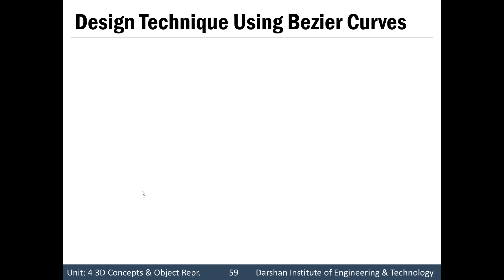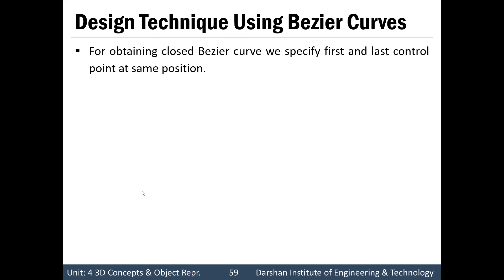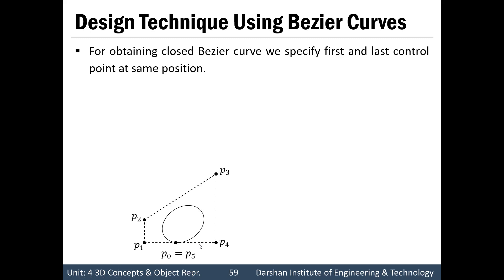Next is design techniques using Bezier Curves — how we can use Bezier Curve properties to design our required curve. For obtaining a closed Bezier Curve, we need to specify the first and last control points at the same position. In this example, P0, P1, P2, P3, P4 and P5 are given, where P5 is at the same position as P0. Because by the properties of Bezier Curves it always passes through the first and last control points, this gives a closed Bezier Curve.